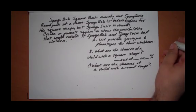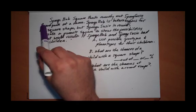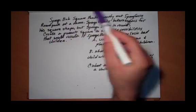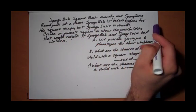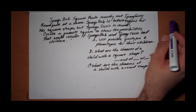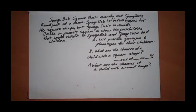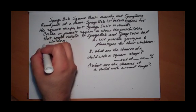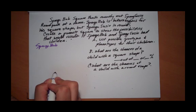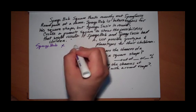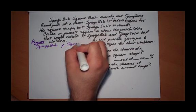Okay students, here's our next problem. SpongeBob SquarePants recently met Sponge Susie. Square pants versus round pants — pretty interesting, huh? SpongeBob is heterozygous for his square shape, but Sponge Susie is round. Create a Punnett square to show the possibilities that would result if they had children. Now let's see — square SpongeBob. We have to put the parents first, remember? So I'm going to write parent SpongeBob and then Sponge Susie.